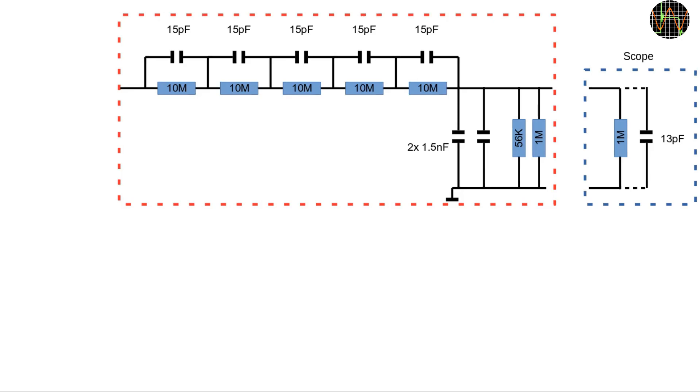The schematics of my probe is in this red dotted box. It may look a bit confusing initially but it is really quite straightforward. Essentially what we have is a resistor divider with 5 times 10MΩ equaling 50MΩ on one side and 50kΩ on the other, which is a ratio of 1000 to 1.